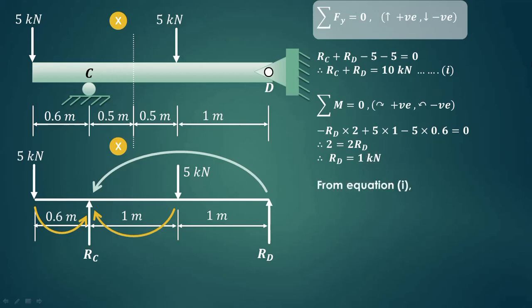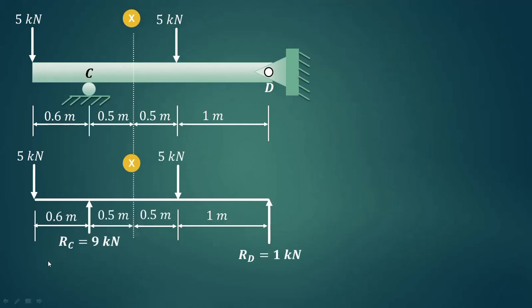Now we can substitute this value in equation 1. From equation 1 we are having Rc is equal to 10, transfer this plus Rd on the other side it is minus, 10 minus Rd, so 10 minus 1, so that is 9. So we have calculated the reactions: Rc is equal to 9 kN and Rd is equal to 1 kN.